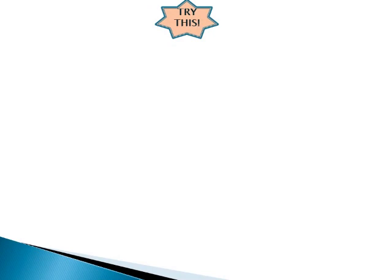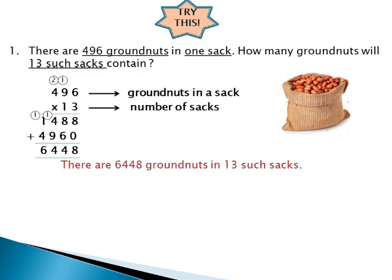Now you can solve repeated addition word problems with larger numbers easily using multiplication. Example: There are 496 groundnuts in one sack. How many groundnuts will 13 such sacks contain? Number of groundnuts in one sack is 496, number of sacks is 13. We have to add 496 thirteen times — it is a repeated addition problem, so we can solve it using multiplication. So 496 times 13 equals 6448. There are 6448 groundnuts in 13 such sacks.